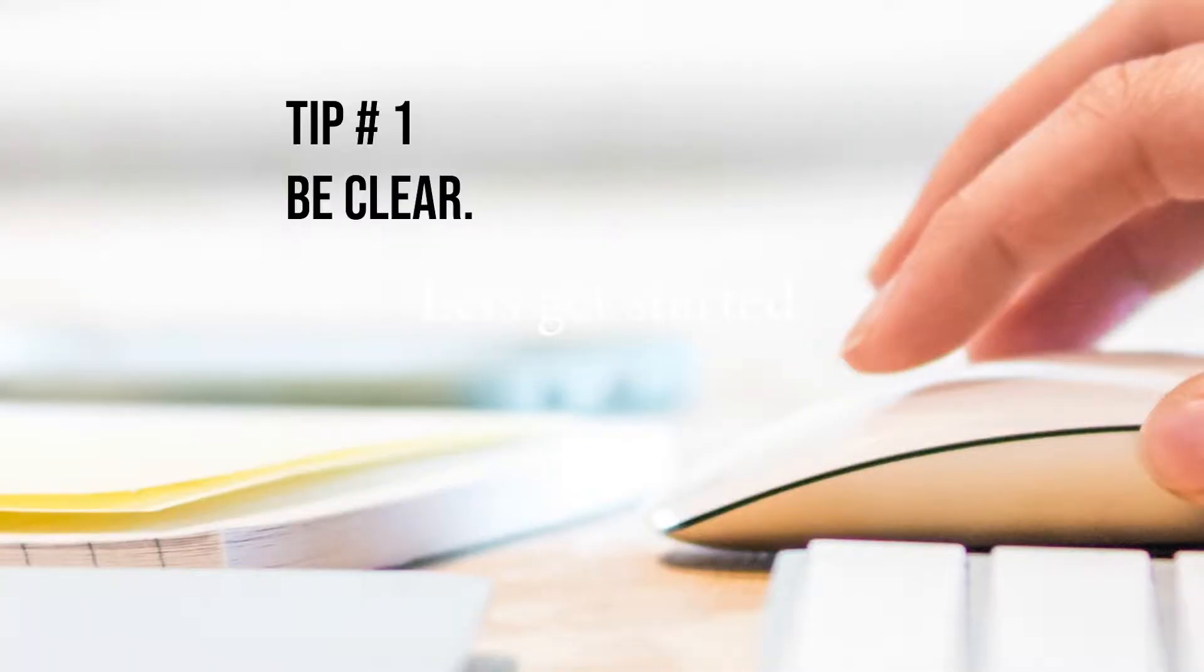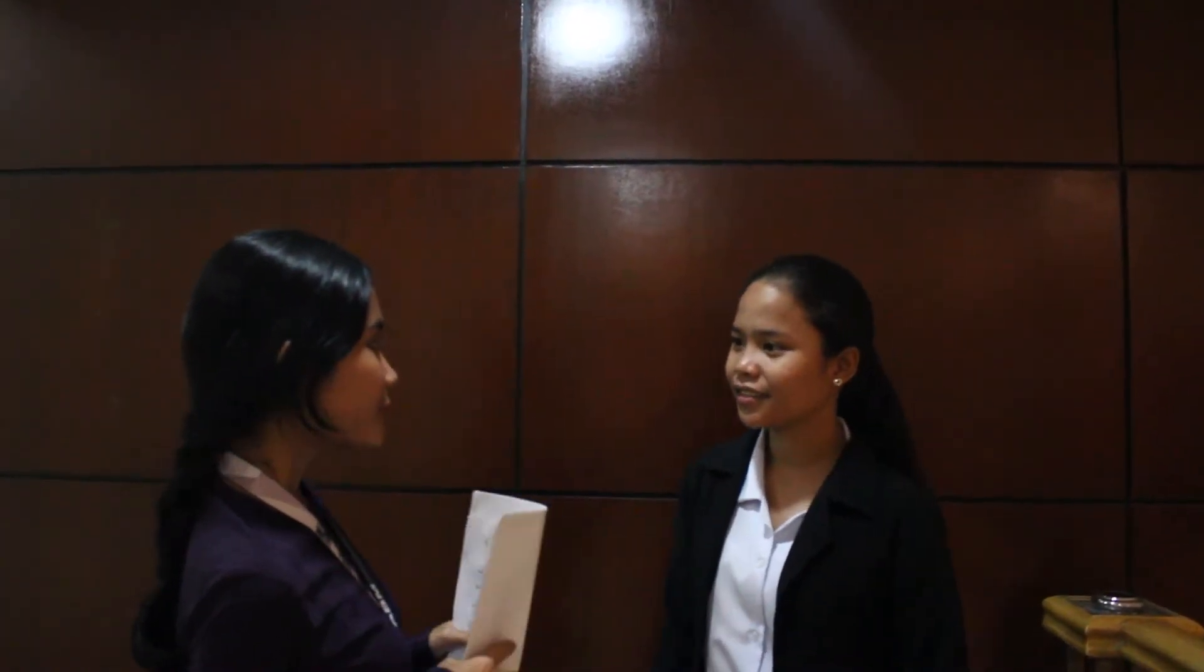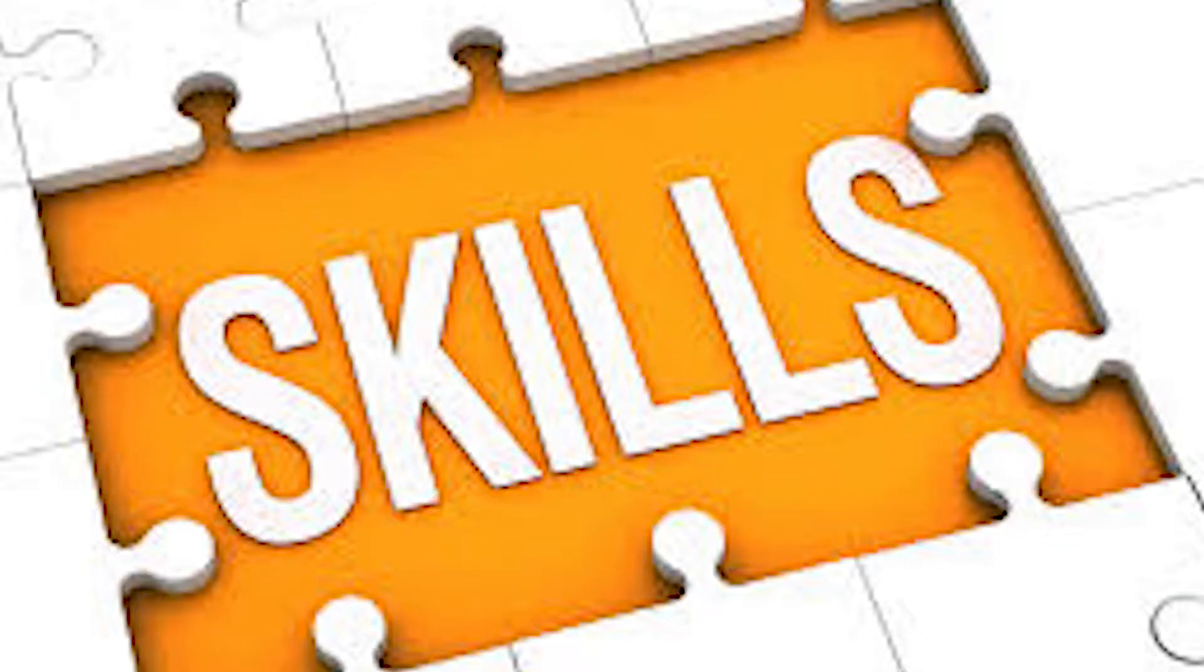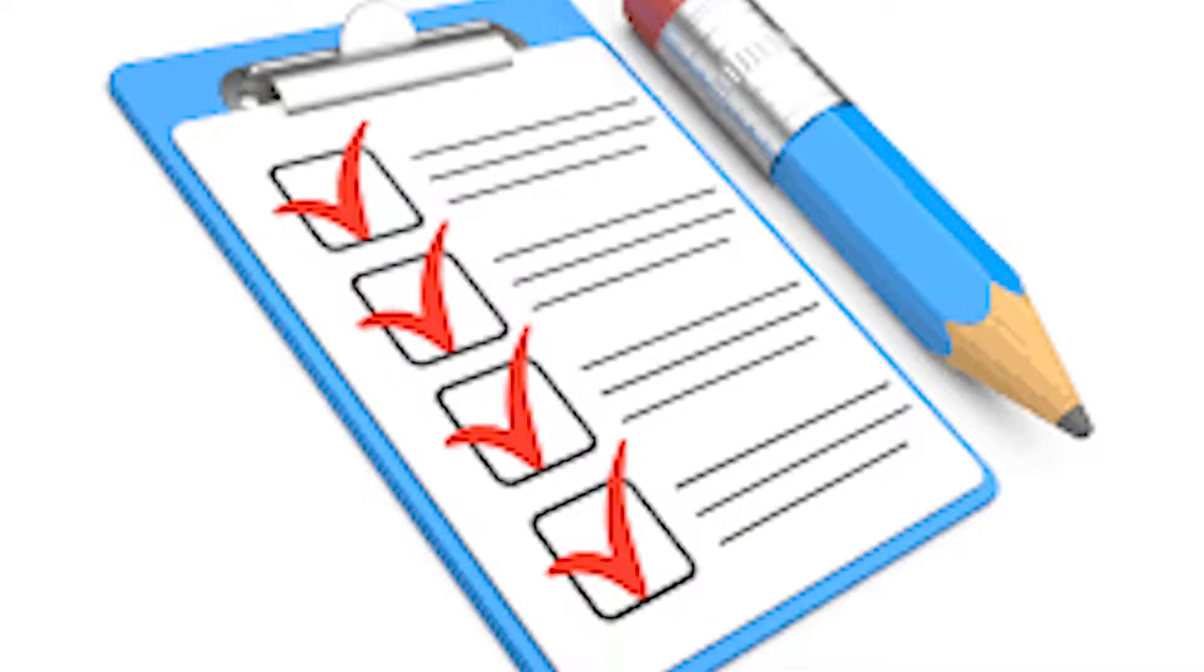Tip number 1: Be clear on what you're looking for. Know what your company needs and know what skill set you're looking for in a candidate. List them down as a checklist and this will make it easier for you to know who to hire.